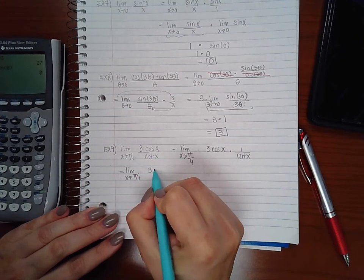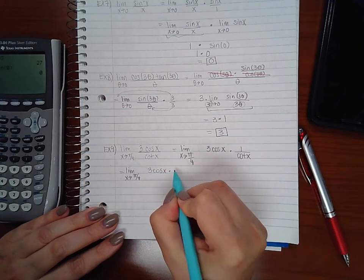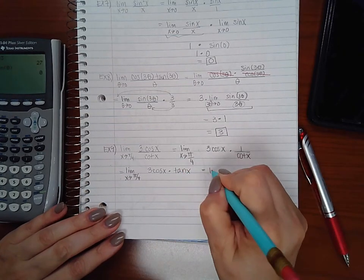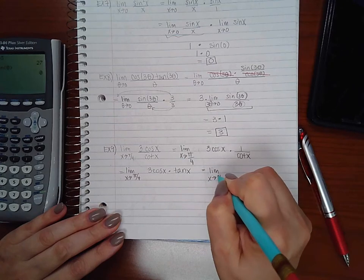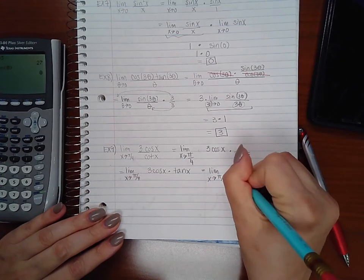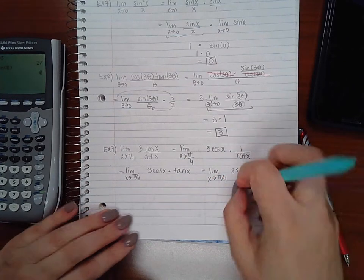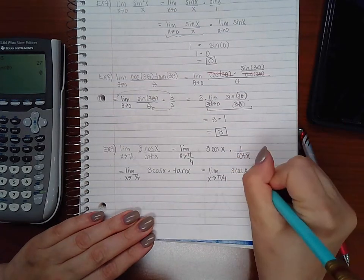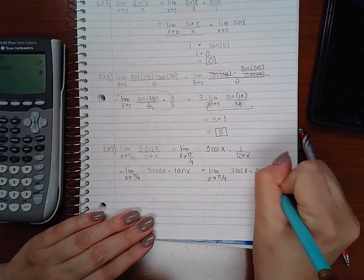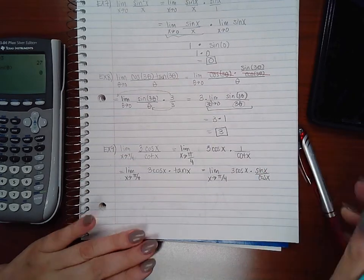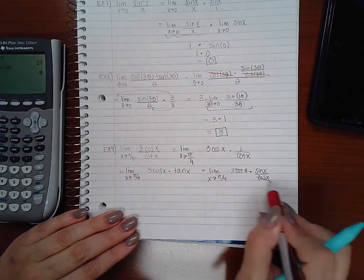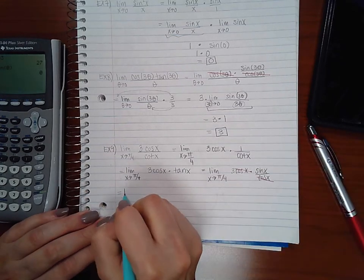Then we learned before that we can write tangent x as its sine cosine definition, and then we have the same thing happening here: cosine and cosine will reduce or cancel.